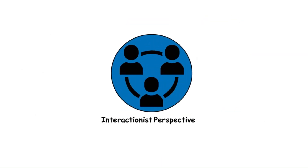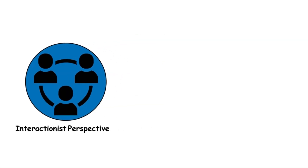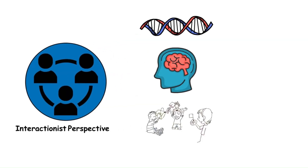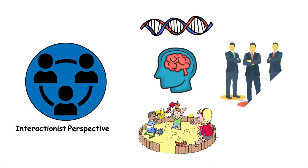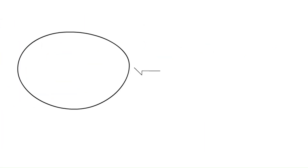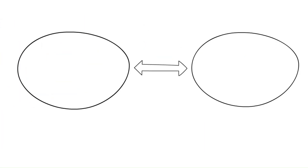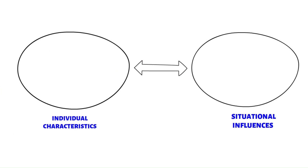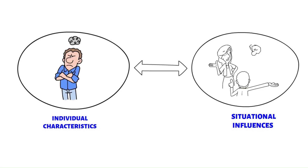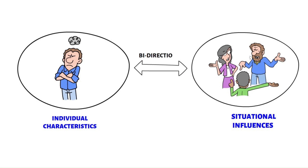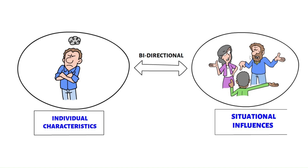The Interactionist Perspective integrates biological, psychological, and environmental factors in shaping personality and behavior. It emphasizes the dynamic interplay between individual characteristics and situational influences. Interactionists study how individuals' traits interact with their environments to produce behavior, recognizing the bidirectional relationships between individuals and their social contexts.